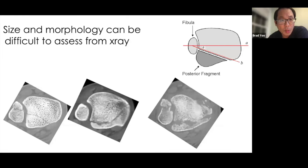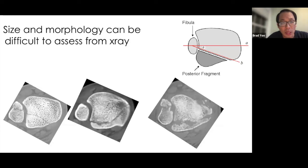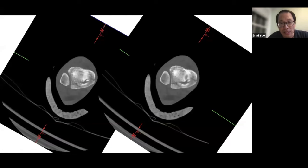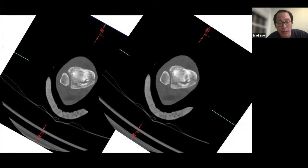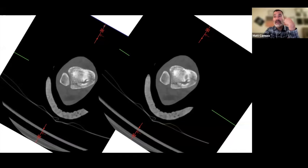Plane radiographs alone cannot adequately assess posterior malleolar fracture morphology due to additional complexities. The CT scan for this patient reveals posterior medial involvement — as Dr. Camuso predicted based on the subtle X-ray finding — confirming the importance of CT in trimalleolar ankle fractures.